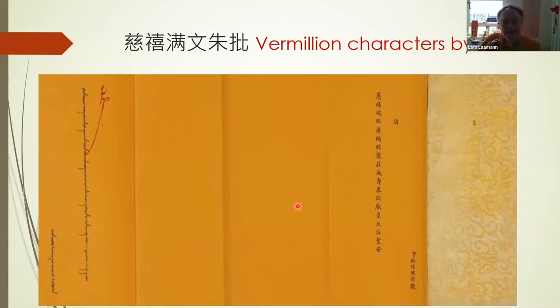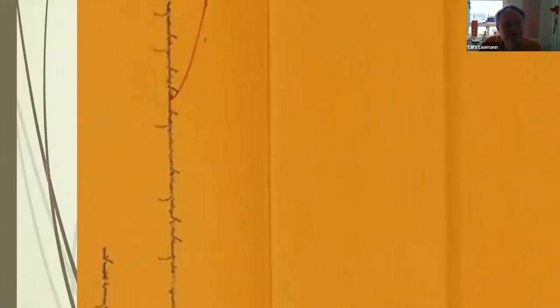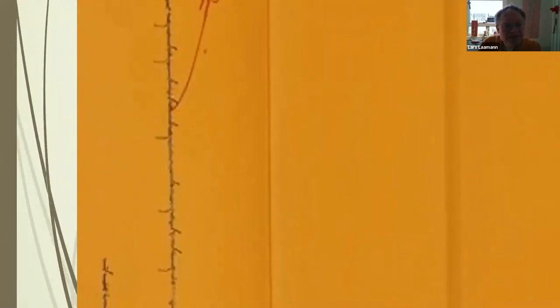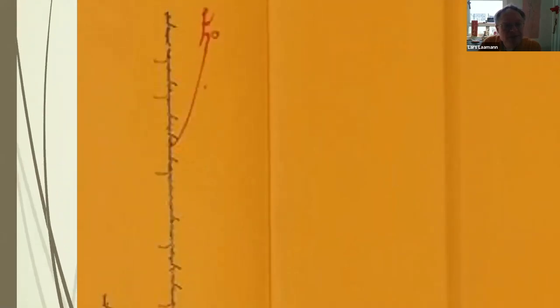So here you have, in Cixi's own handwriting, Manchu script. If you enlarge this, you see the spine that I talked about earlier on. She leaves minimal distances between words, so it looks almost as if it were embroidered.